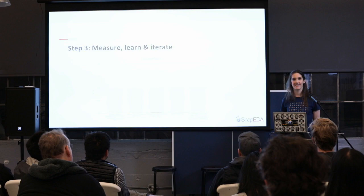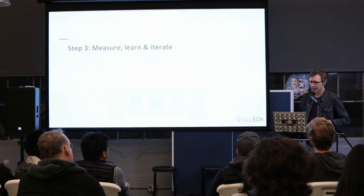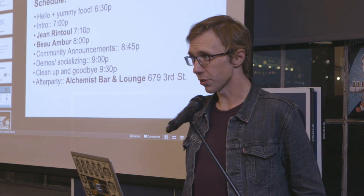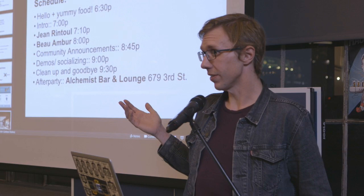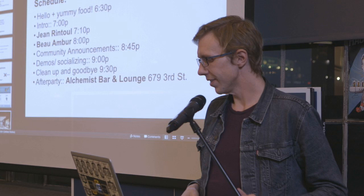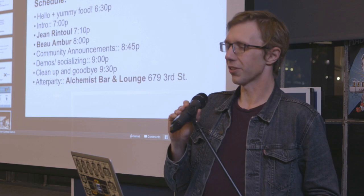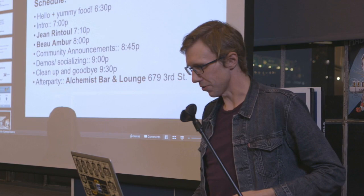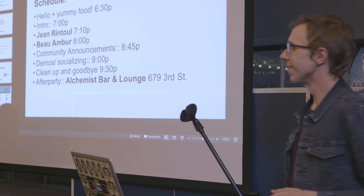Thank you so much. During the open floor time, an announcement was made: Astronis, a company right down the street, builds micro-satellites for low-cost, on-demand bandwidth. They just announced their first customer — putting up a dedicated satellite for the state of Alaska, which will triple the amount of bandwidth available to people there, who currently pay around $300 a month for 5 megabits per second. They are hiring, especially electrical engineers.